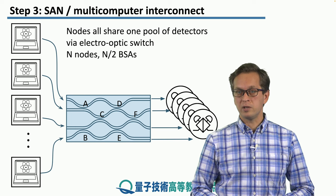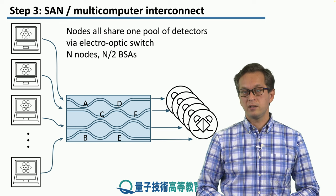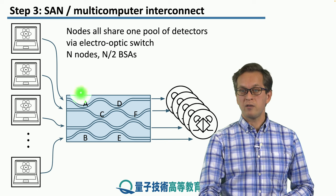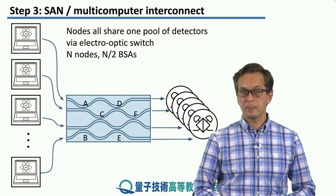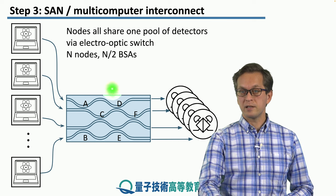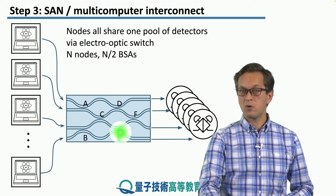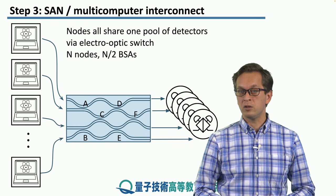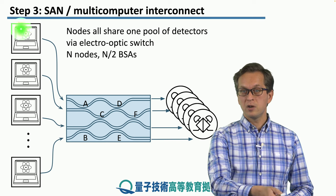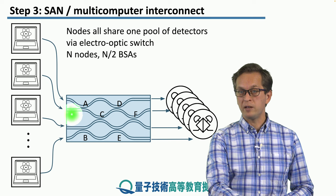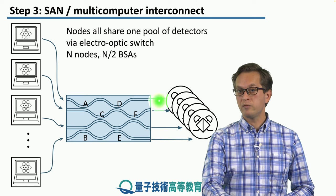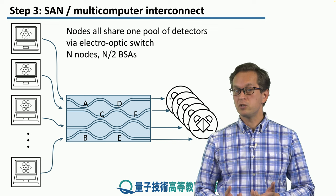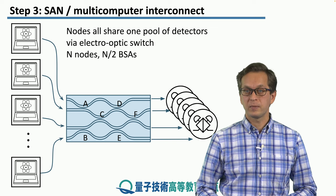We can also think about using waveguide switches in the same way — here using a 4-by-4 crossbar switch with 6 interference nodes, or six 2-by-2 switches. We have N computational nodes sending their photons into the N input ports — in this case just 4 — and 4 output ports connecting to N over 2 BSAs, or in this case just 2 BSAs.